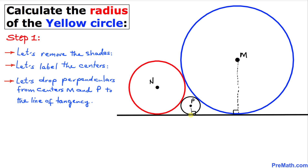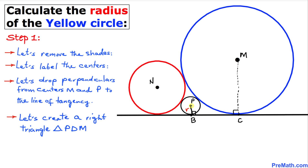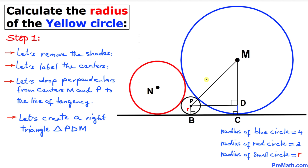We'll call the points on the horizontal line point B and point C. The radius of the small circle is r. Now we connect points P and M — the centers — and draw a perpendicular from point P to line MC, calling that point D. Since this is a perpendicular, this angle is 90 degrees, giving us right triangle PDM.